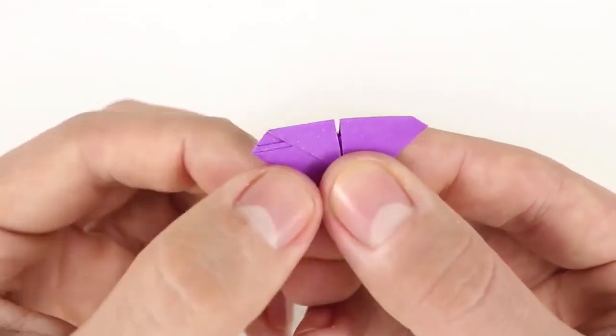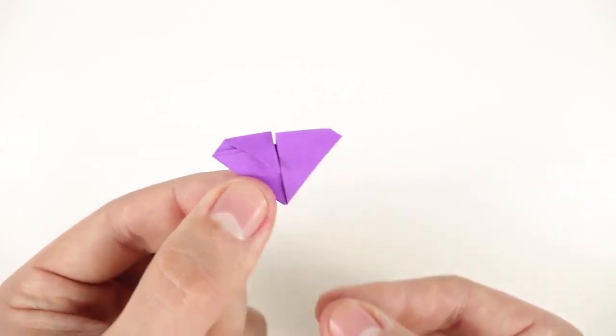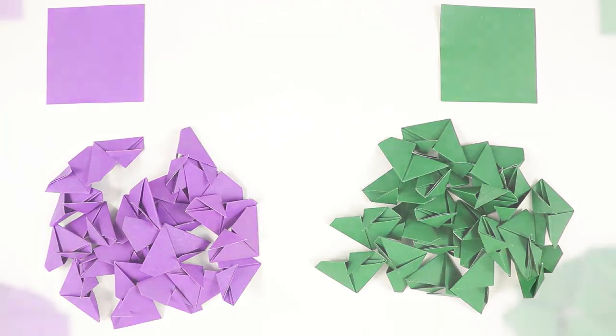And, do the same with all 46 pieces. Now, we have 23 of each direction, and 2 squares without folding.